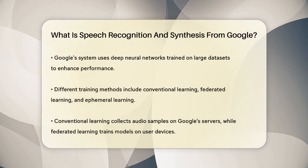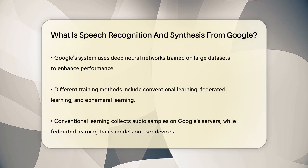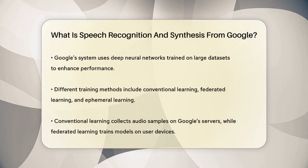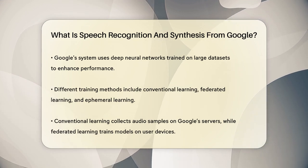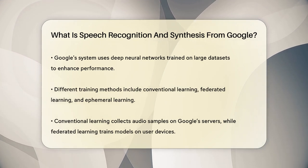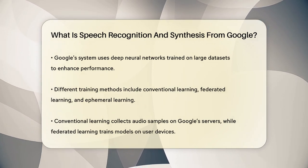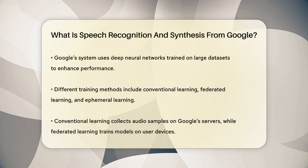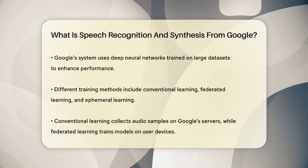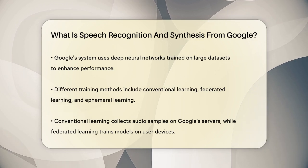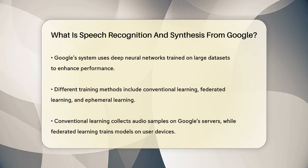Google's speech recognition system relies heavily on deep neural networks, which are trained on vast amounts of data to improve accuracy and speed. There are different ways Google trains these models, including conventional learning, federated learning, and ephemeral learning. Conventional learning involves collecting and annotating audio samples on Google's servers, while federated learning trains models directly on your device to preserve privacy. Ephemeral learning uses short-term memory to train models in real time without storing any audio data.